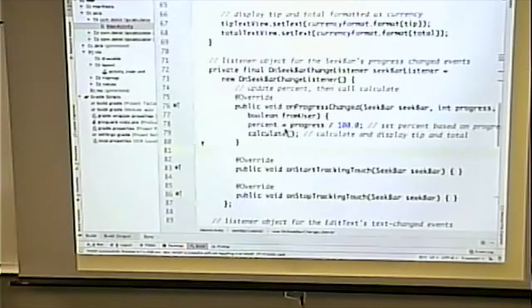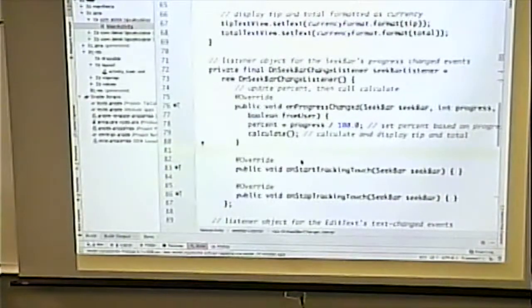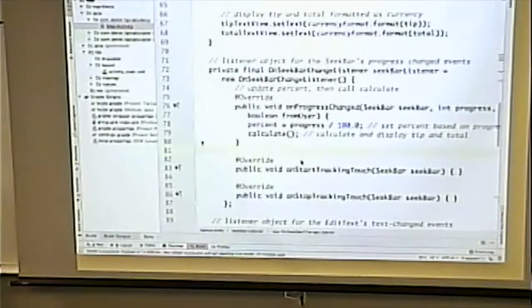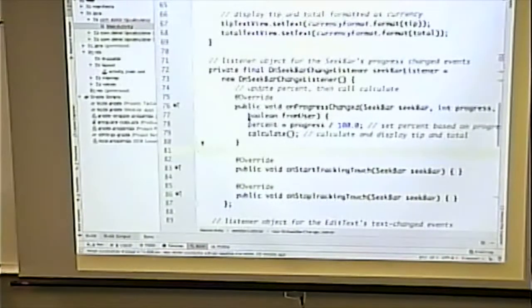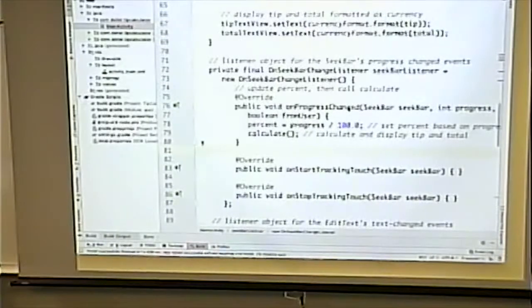What does the on seek bar listener do? It has three methods. Because there's three methods in a seek bar listener. Remember the on click listener is only one method. Here there's a different method. Different methods because it's a different kind of listener.